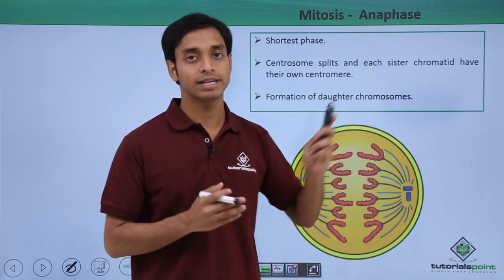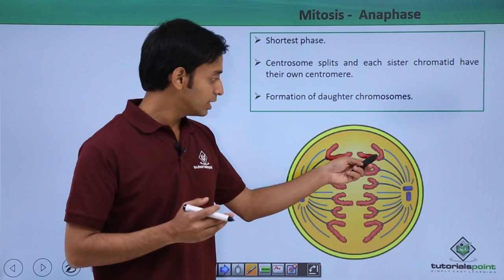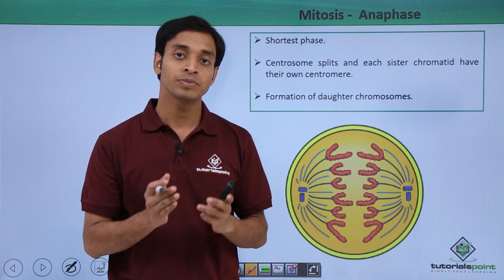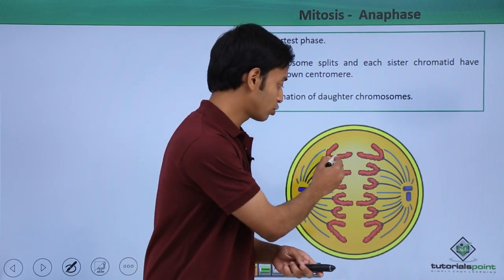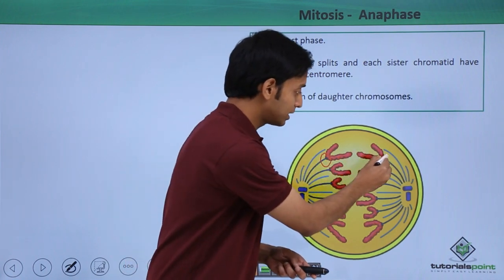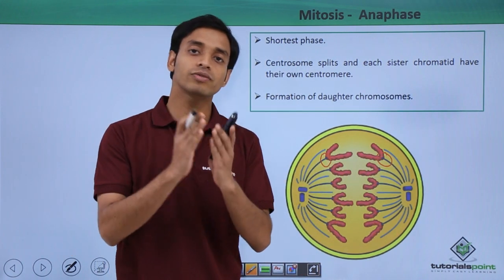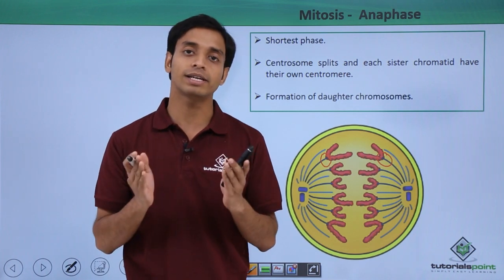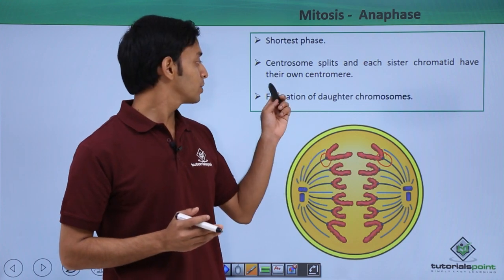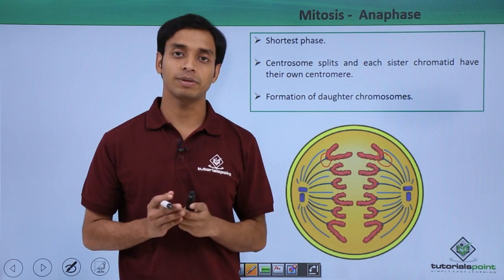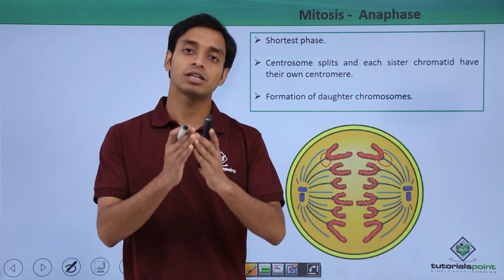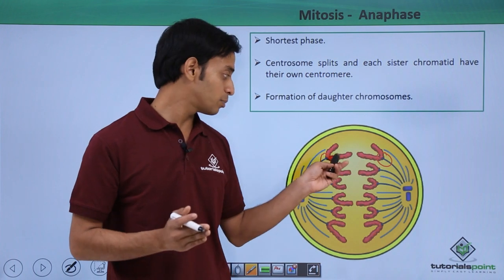During anaphase, the chromosomes split into sister chromatids. Initially there was a single centromere, but after splitting, each sister chromatid has its own centromere. The formation of daughter chromosomes takes place because the duplicated or replicated chromosomes split into two halves, becoming the daughter chromosomes.